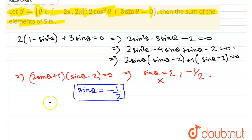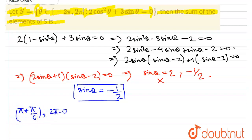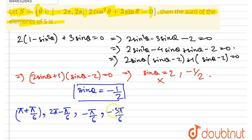So sinθ = −1/2. In [0, 2π], sinθ = −1/2 in the 3rd and 4th quadrants, giving θ = π + π/6 and θ = 2π − π/6. In [−2π, 0], the values are θ = −π/6 (4th quadrant) and θ = −5π/6 (3rd quadrant).